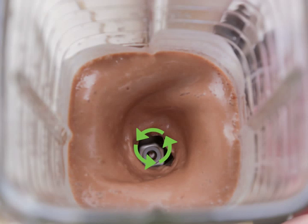If you'd like some extra crunch, add ¼ cup of mini chocolate chips in the last few seconds of blending.